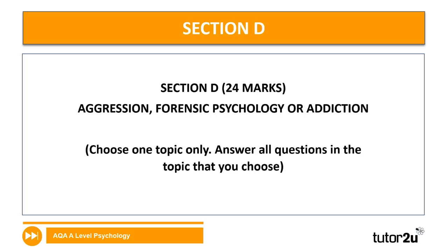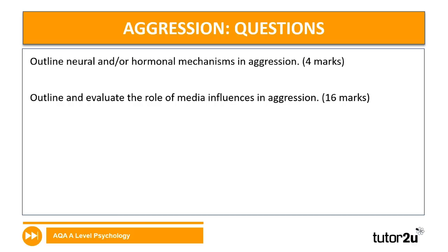Our last section — Section D — is aggression, forensics, or addiction. You will have studied just one of these, so skip to the section you have been taught. For aggression: outline neural and/or hormonal mechanisms in aggression for four marks (you can do both or just one); and outline and evaluate the role of media influences in aggression for 16 marks — six marks AO1 and ten marks AO3. Pause the video to attempt those questions before moving on to further aggression questions.